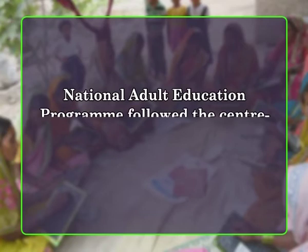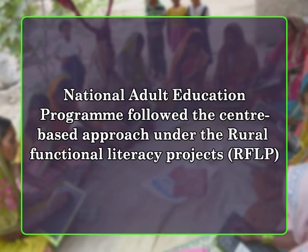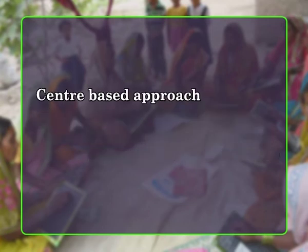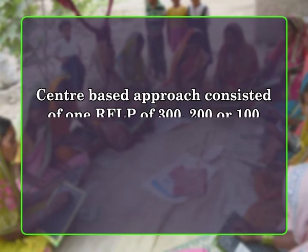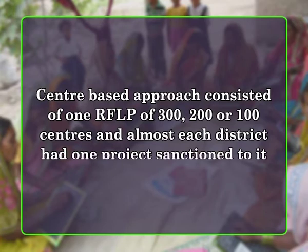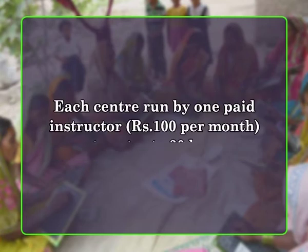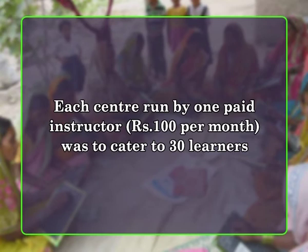The National Adult Education Program followed the center-based approach under the Rural Functional Literacy Projects. The center-based approach consisted of one Rural Functional Literacy Project of 300, 200, or 100 centers, and almost each district had one project sanctioned to it. Each center, run by one paid instructor at the rate of Rs. 100 per month, was to cater to 30 learners.